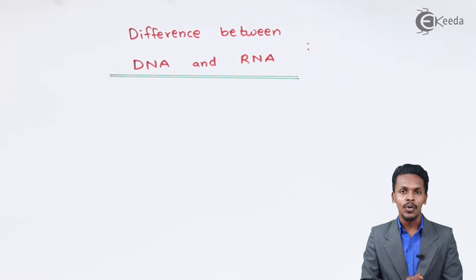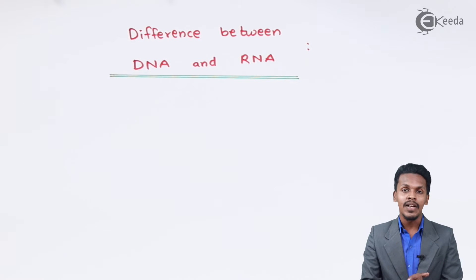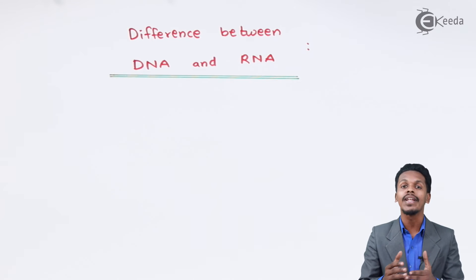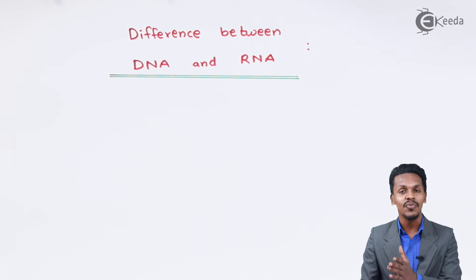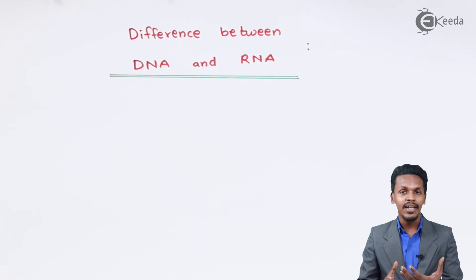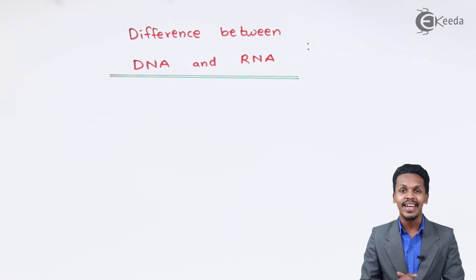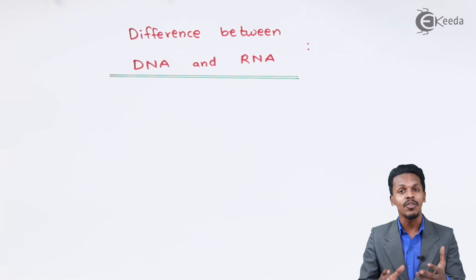The molar mass of DNA can range from 6×10⁶ to 16×10⁶ units, while the molar mass of RNA has a range from 20,000 to 40,000 units. In terms of functionality, DNA can replicate but RNA cannot replicate — that is the uniqueness of DNA. That's the reason the genetic information is transferred because of DNA only and not because of RNA.